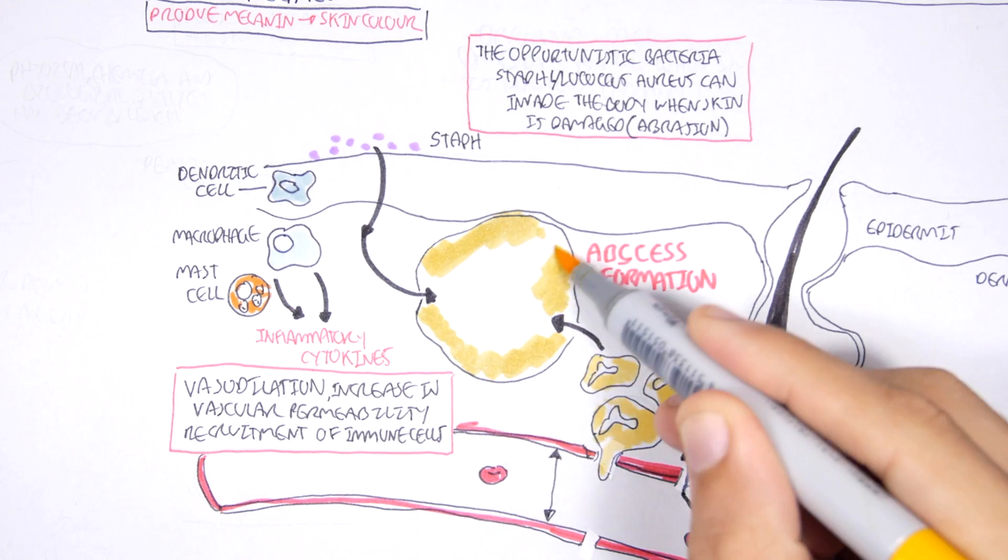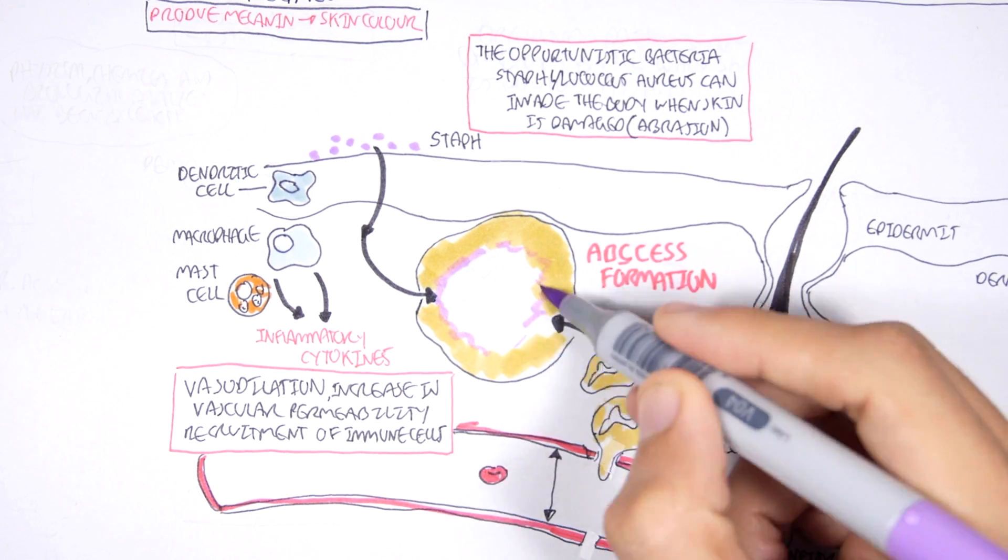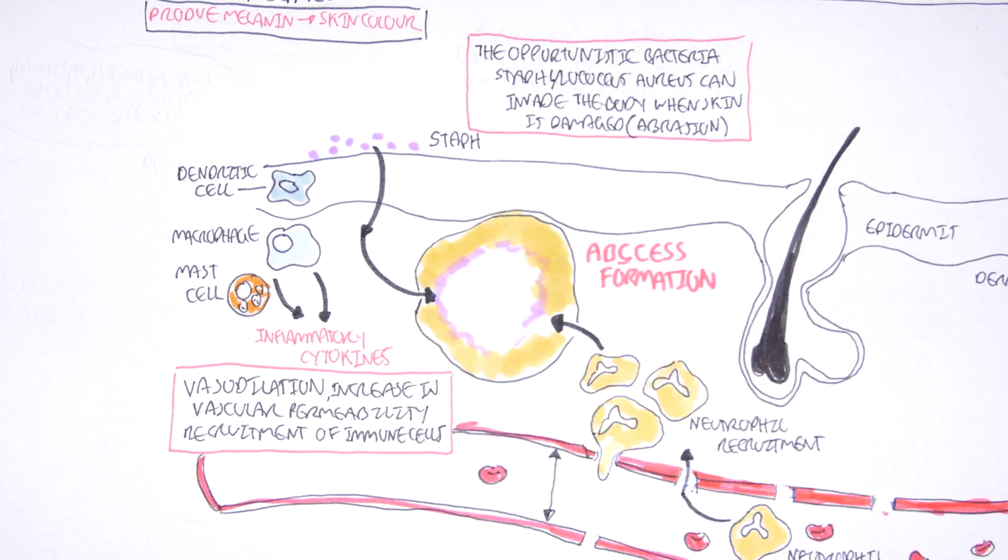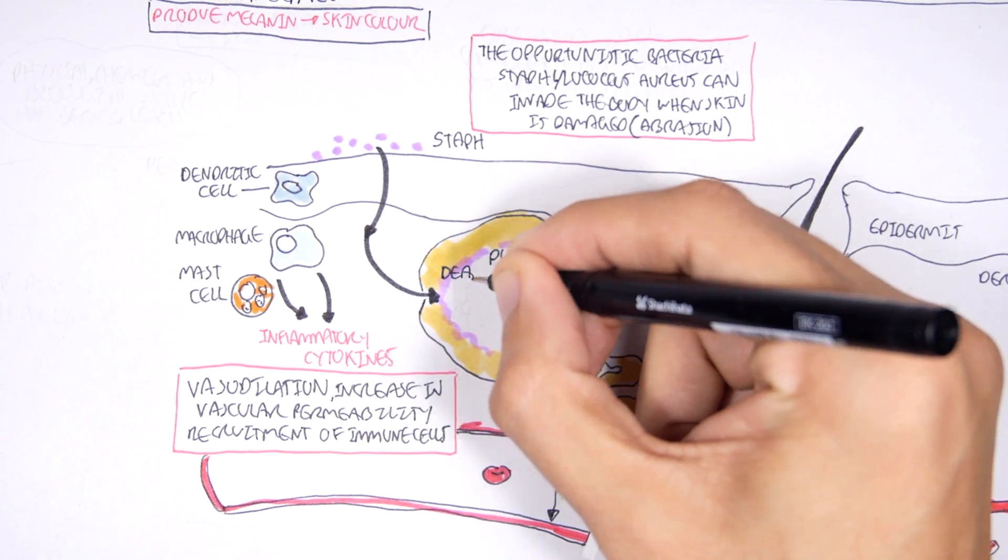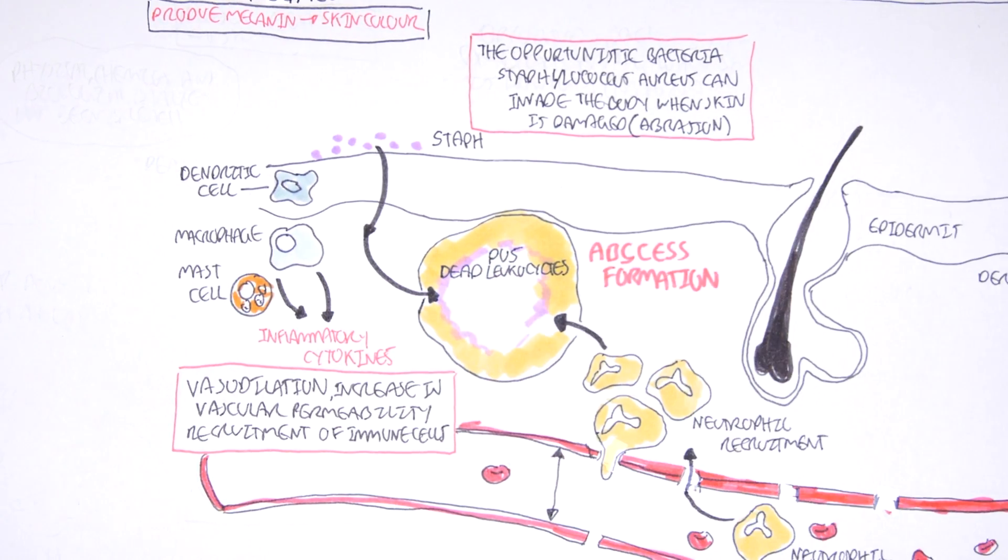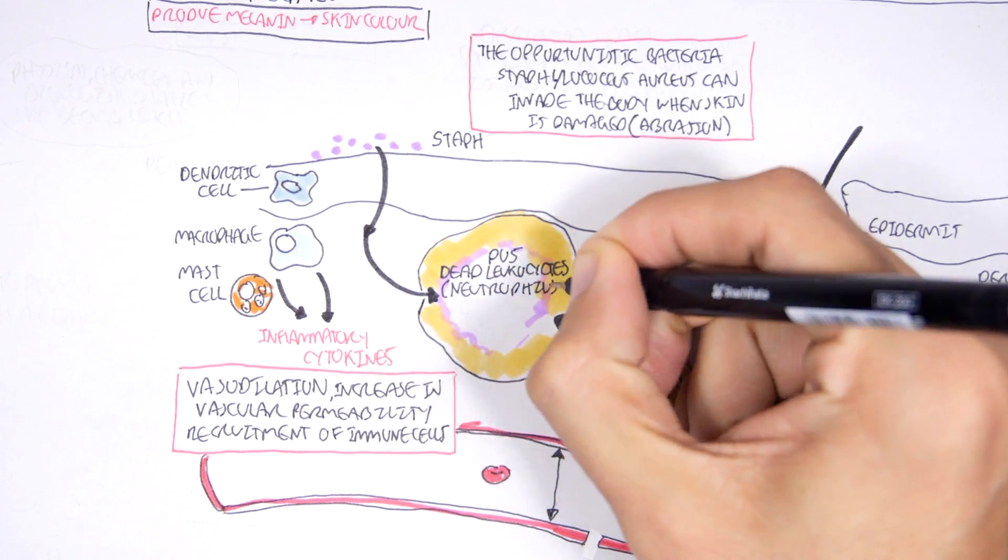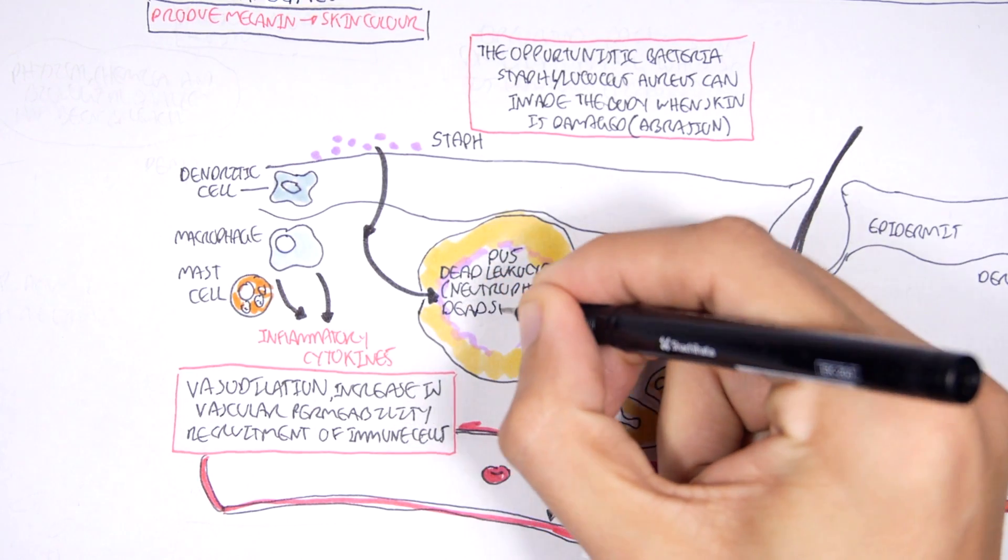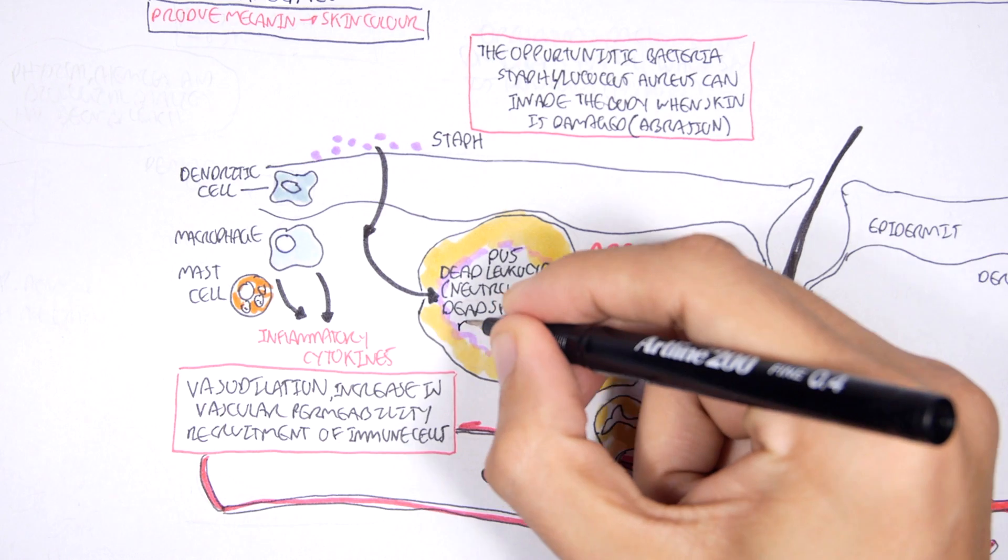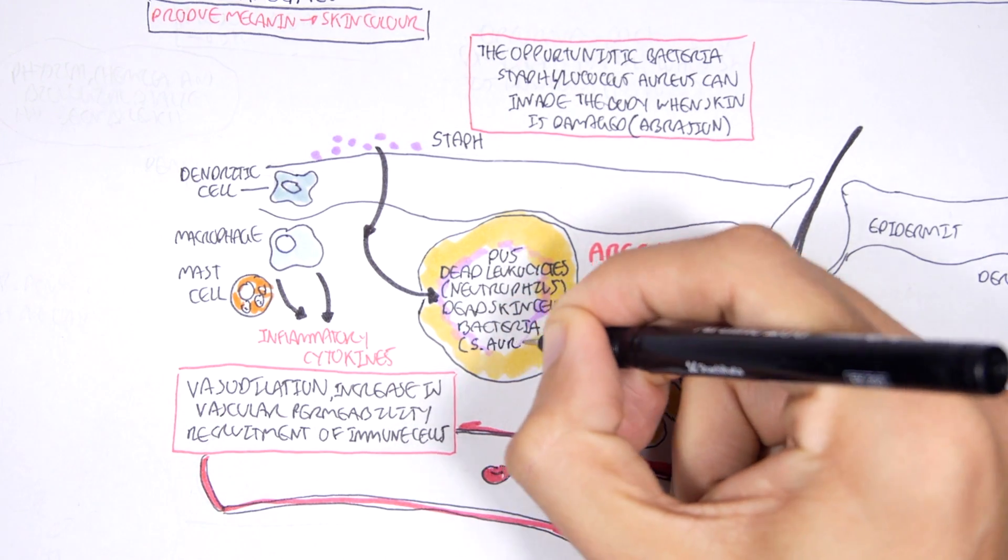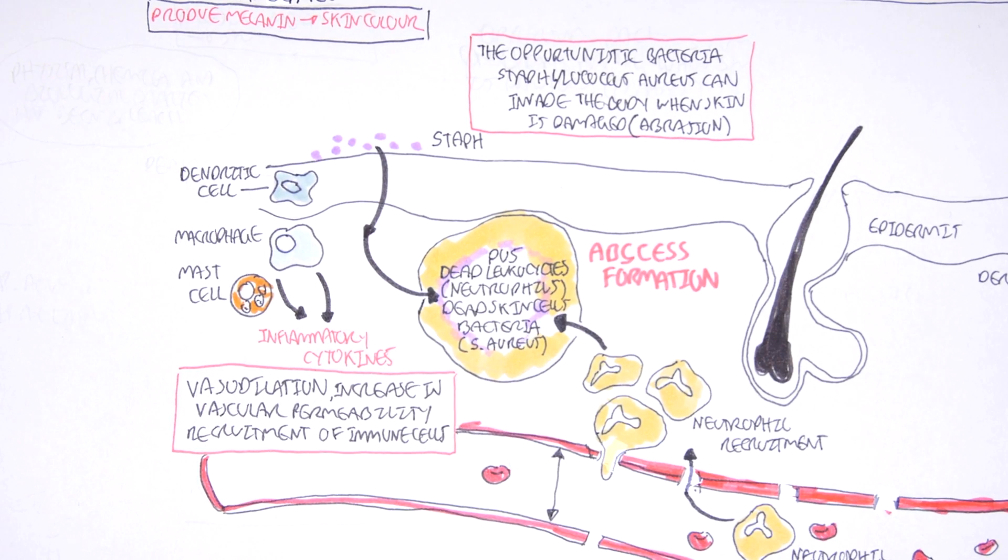Now an abscess is essentially pus, pus containing dead leukocytes, which are the neutrophils as well as other immune cells. And there's also dead skin cells, the epithelial cells and connective tissue. There's also bacteria, which is Staphylococcus aureus.